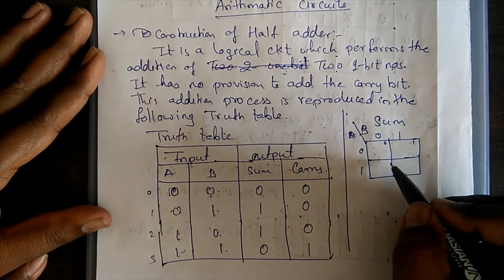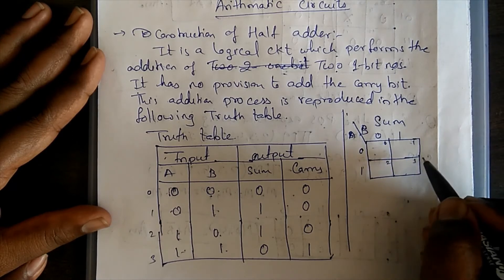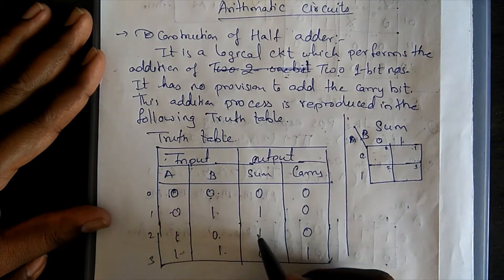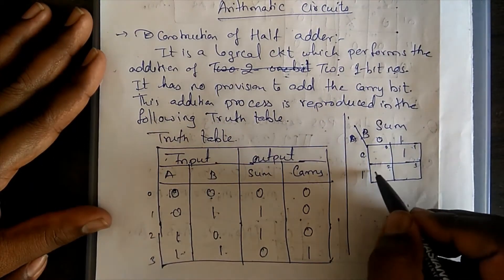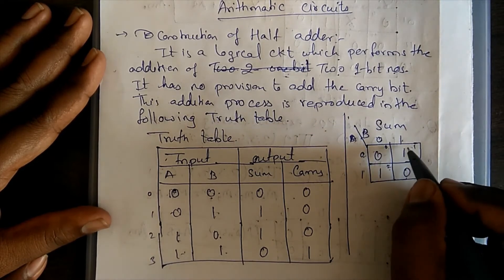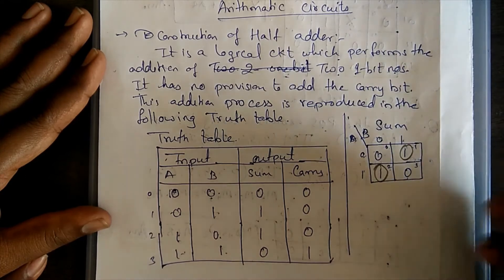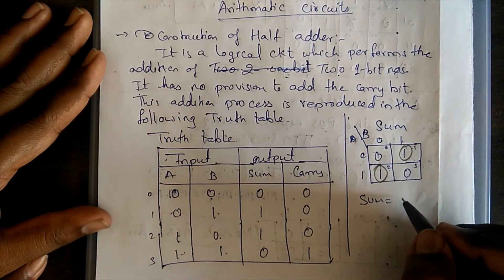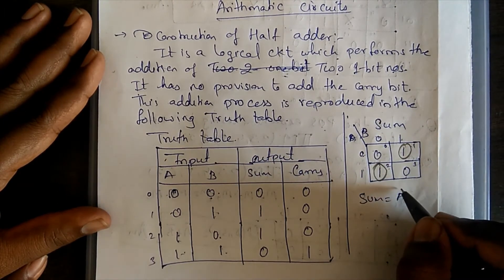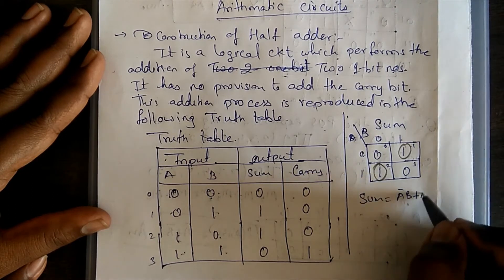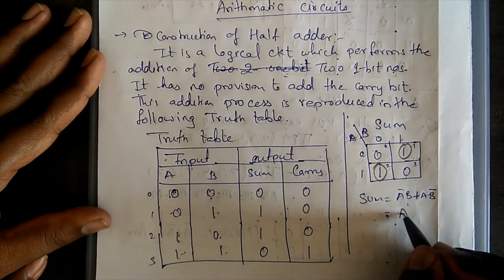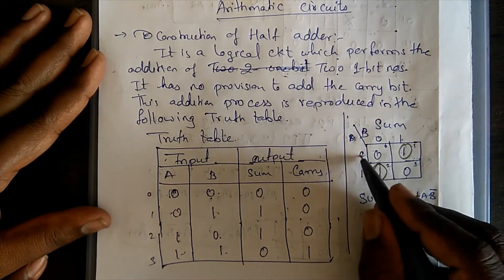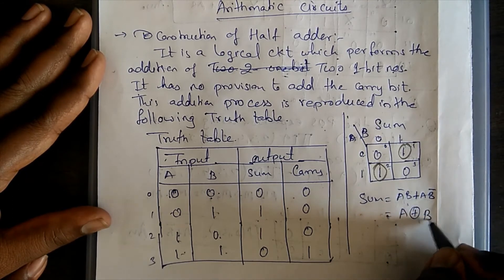The K-map cells are: cell 0 → 0, cell 1 → 1, cell 2 → 1, cell 3 → 0. So the 1s are at cells 1 and 2. From this, the sum equation is: S = A̅B + AB̅, which is A XOR B — as we have seen in the previous lecture in unit one.